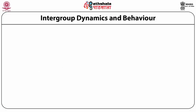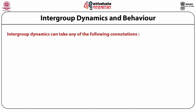When people interact with each other in a group, intergroup dynamics can take any one of the following connotations: there could be accommodation, avoidance, collaboration, competition, compromise, de-individuation, or diffusion of responsibility. Let us try to understand these connotations one by one.